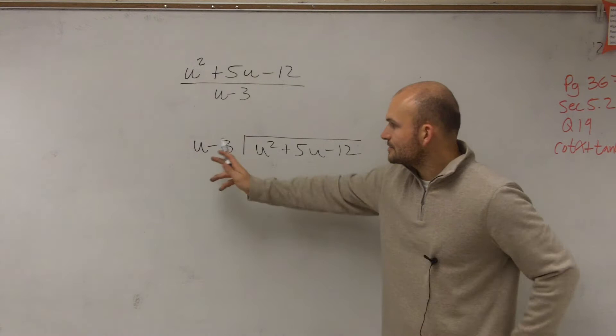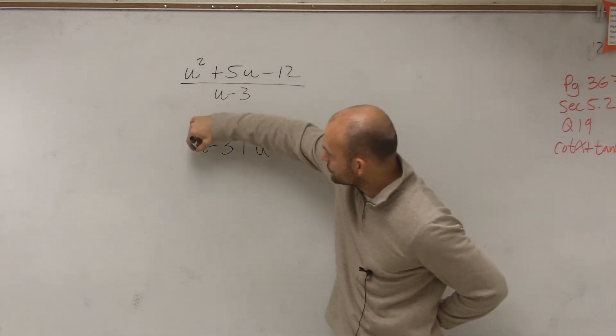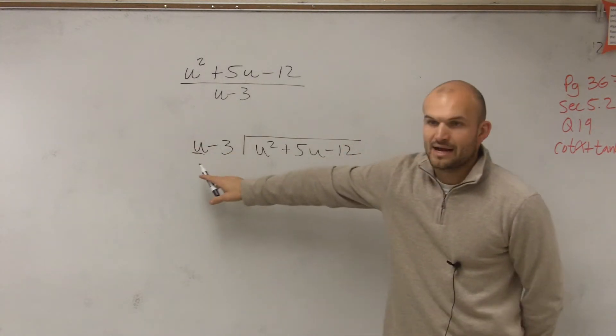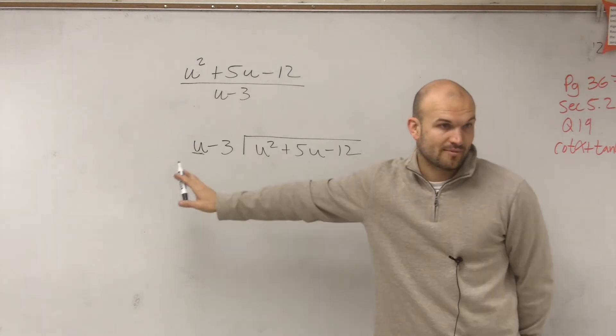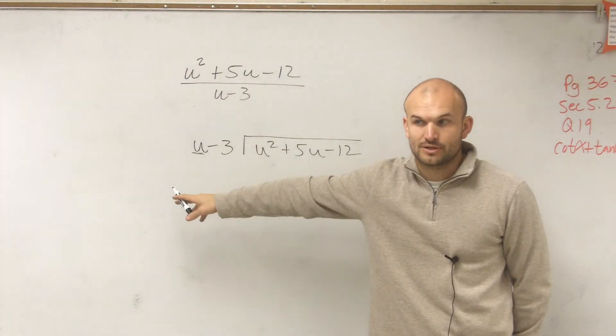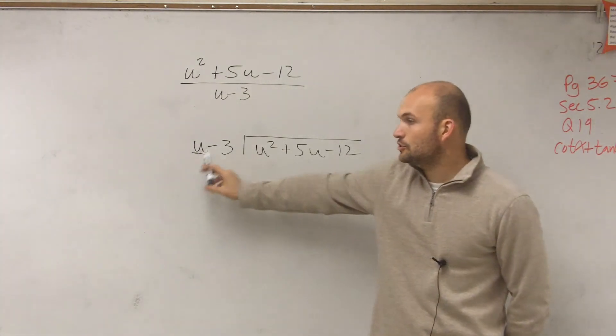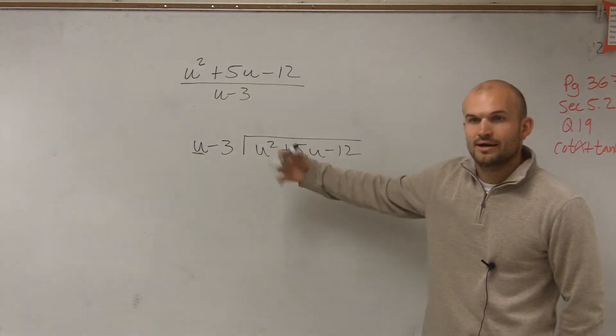So the first thing we're going to do is always take our first term. We've got to make sure that it is in standard form, in descending order. So therefore, I say u divides into u squared how many times?